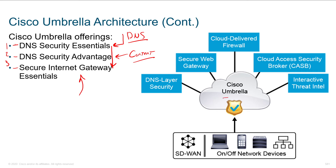Is it fair to say Cisco Umbrella is just DNS filtering? Of course not. DNS is one thing it can do, but it's also a web gateway with policies, a cloud-delivered firewall with Layer 3 and Layer 4 criteria, a Cloud Access Security Broker, and it provides interactive threat intelligence — SSL decryption, file analysis, sandboxing for unknown content, giving back really good information.